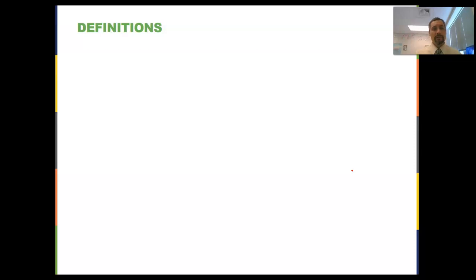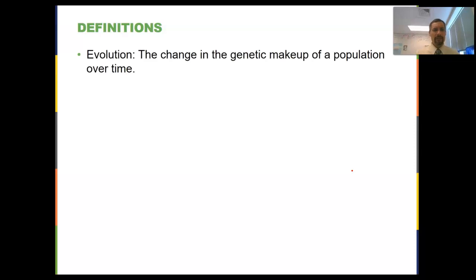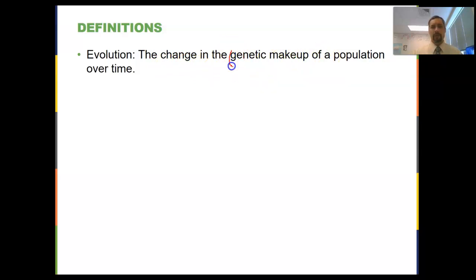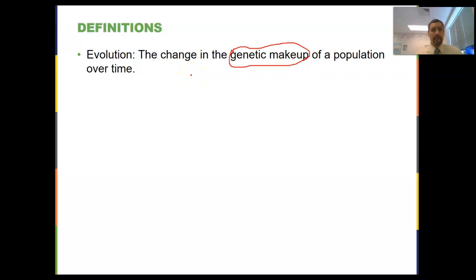Let's start with some definitions. The first definition is evolution. Evolution is the change in the genetic makeup of a population over time. The key there is the genetic makeup — we're going to be talking about genotypes and phenotypes, getting back into some of our genetics from units five and six.